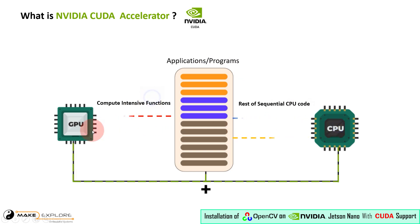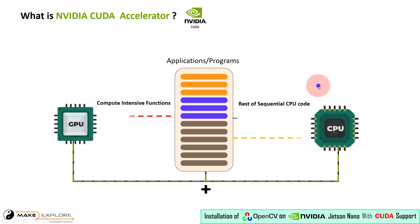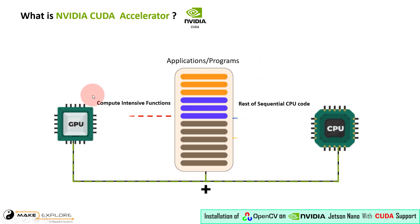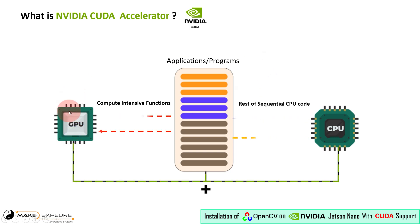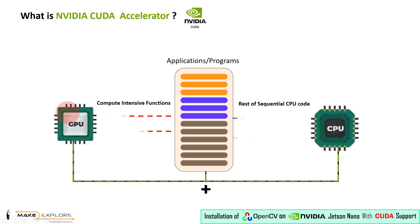The main task of CUDA is offloading computation. In a typical application using a CUDA accelerator, the main program runs on the CPU, but the computationally intensive parts — for example, matrix multiplications, deep learning model training, and large-scale simulations — are offloaded to the GPU.